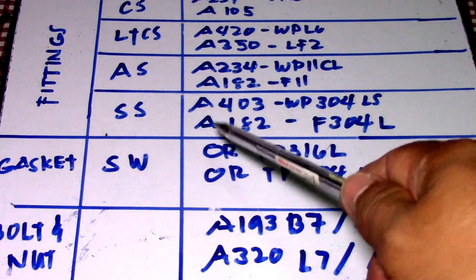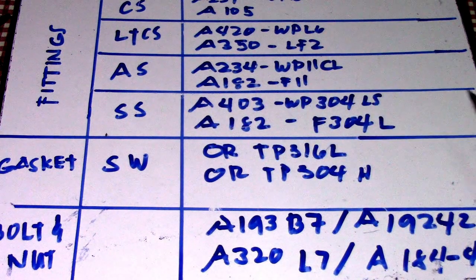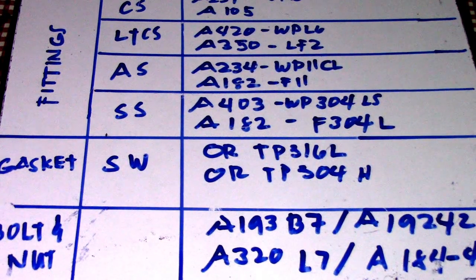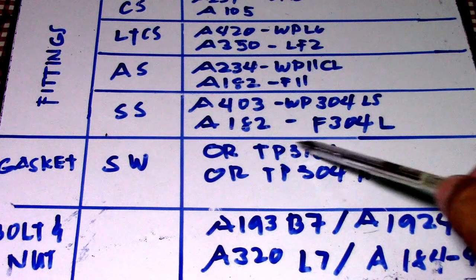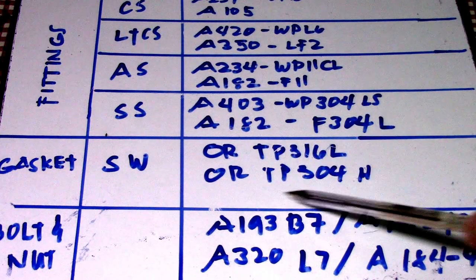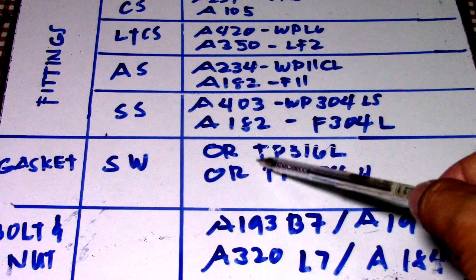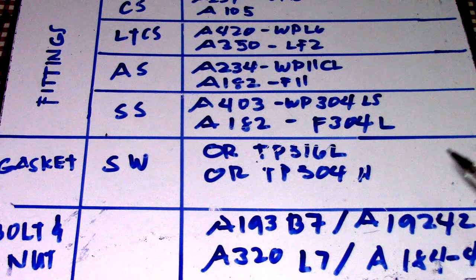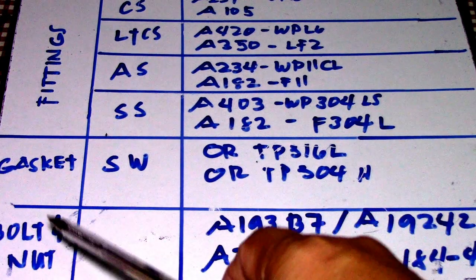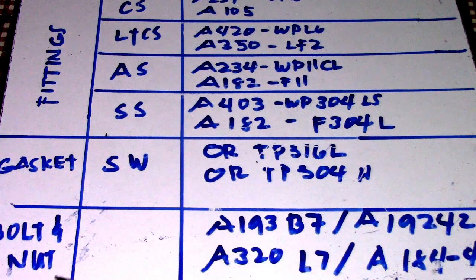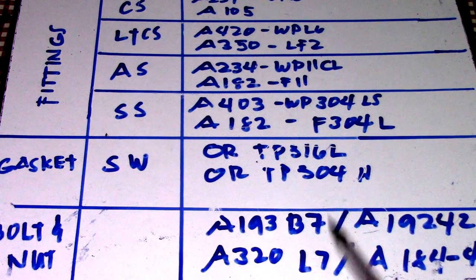The outer ring is stainless steel 316 and 304H. For bolts and nuts, the ASTM stem codes are B7 and L7. L7 is for low-temperature service. The codes are A193 B7 and A320 L7.